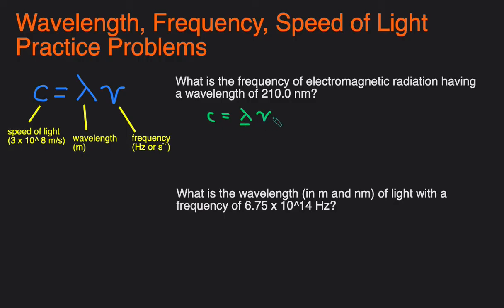C equals wavelength times frequency. So we're given the wavelength and we have to calculate the frequency. So we can just rearrange this, make it frequency equals the speed of light divided by the wavelength. So pretty much just divide both sides by the wavelength.